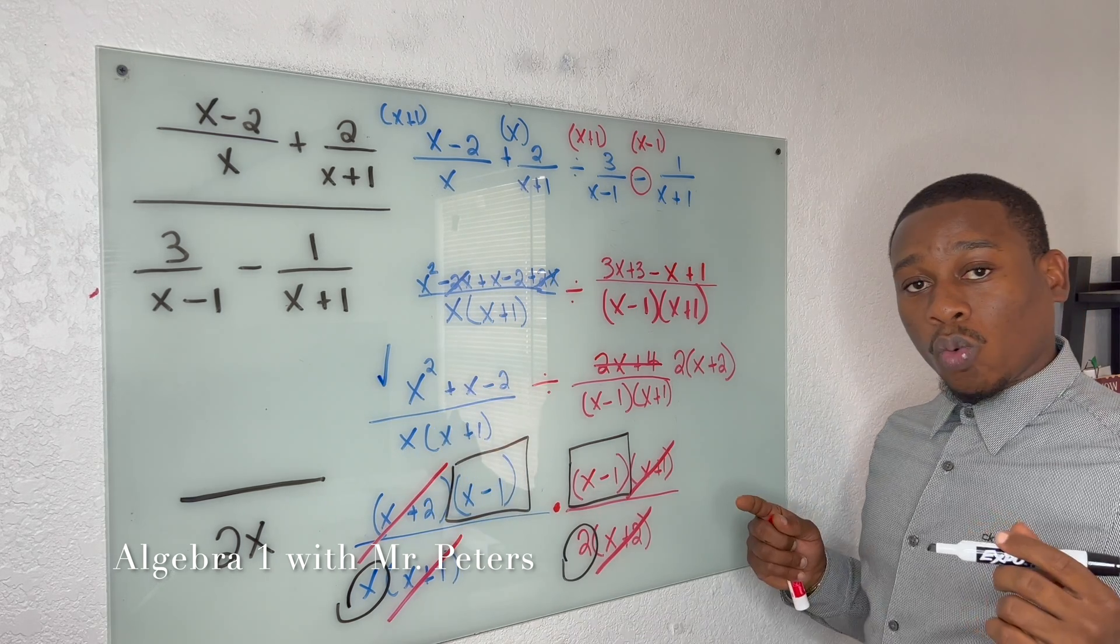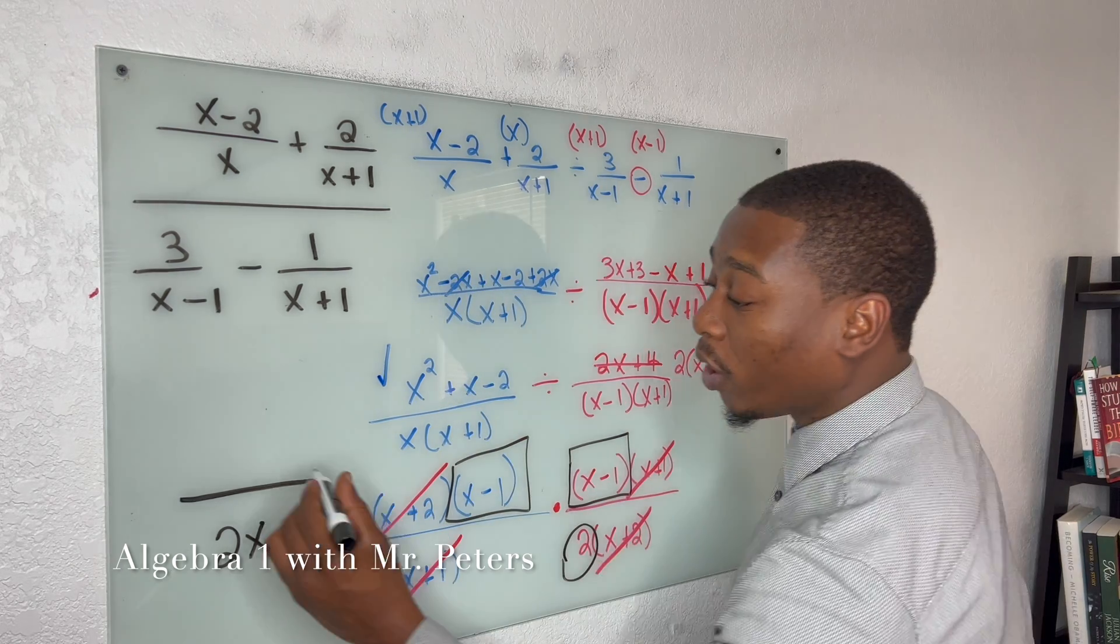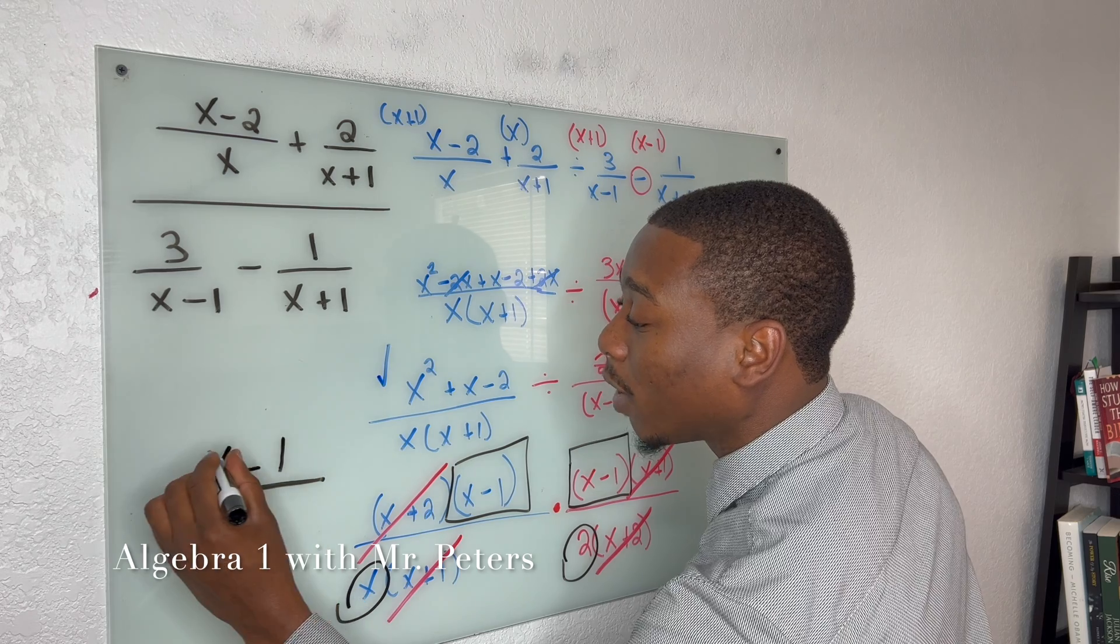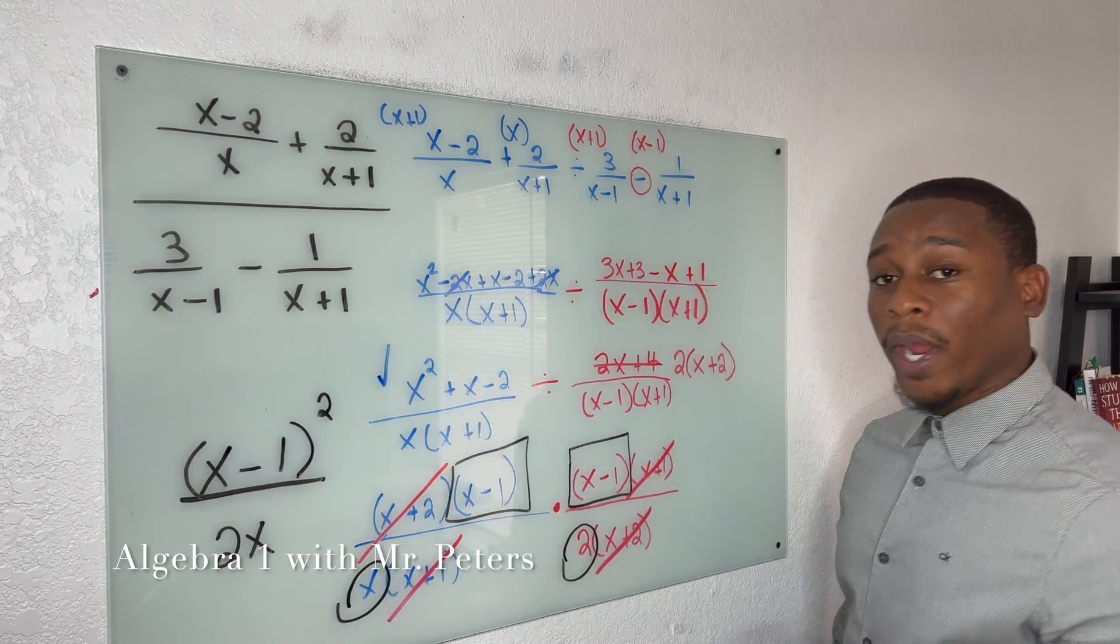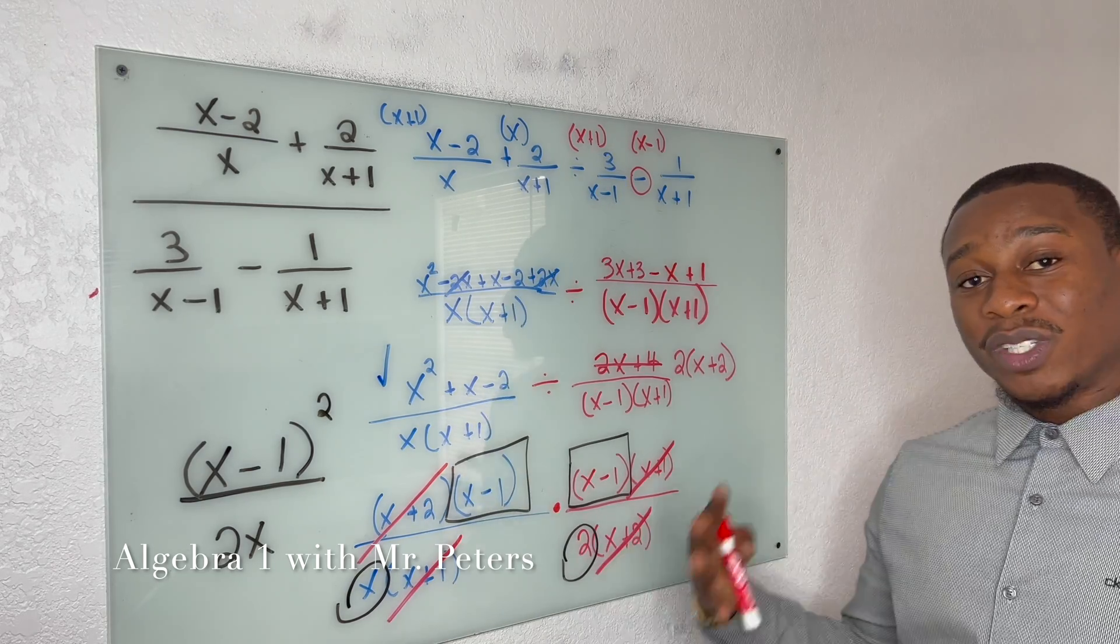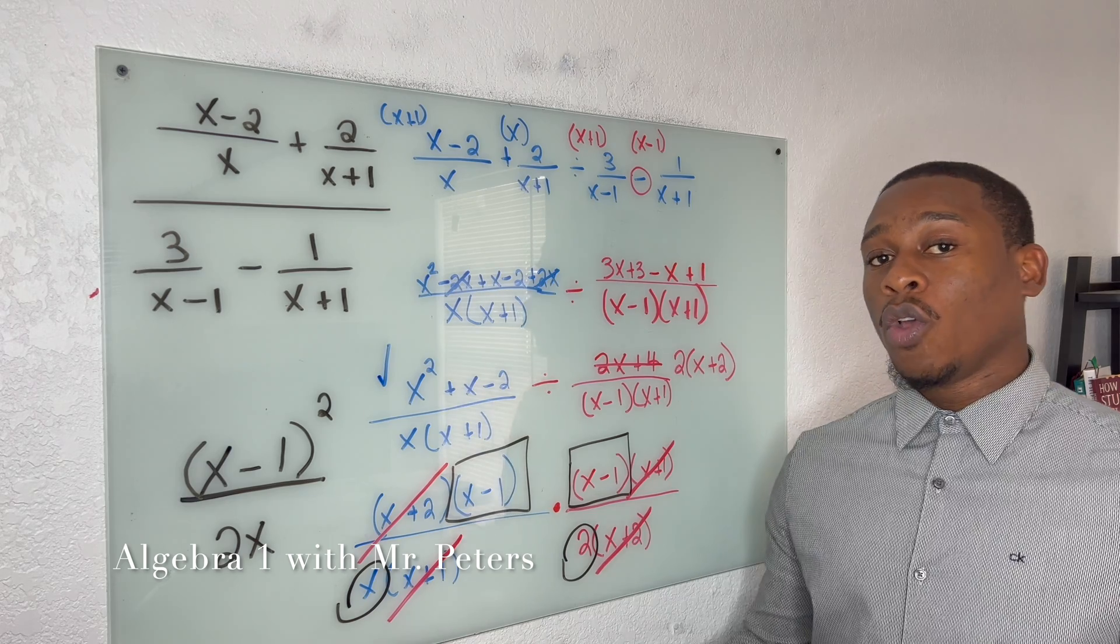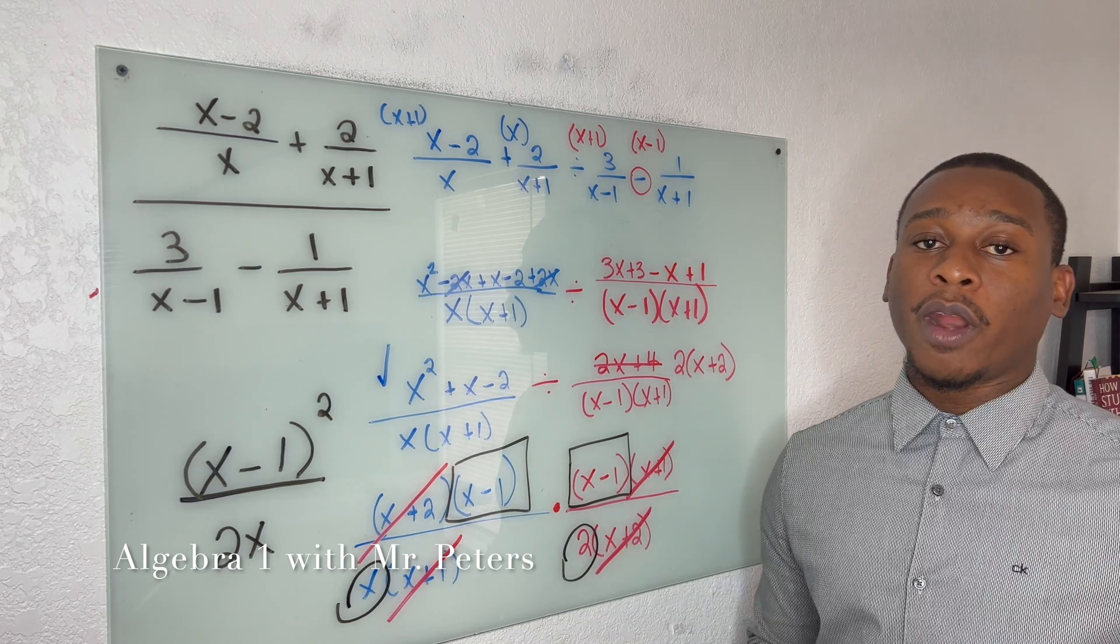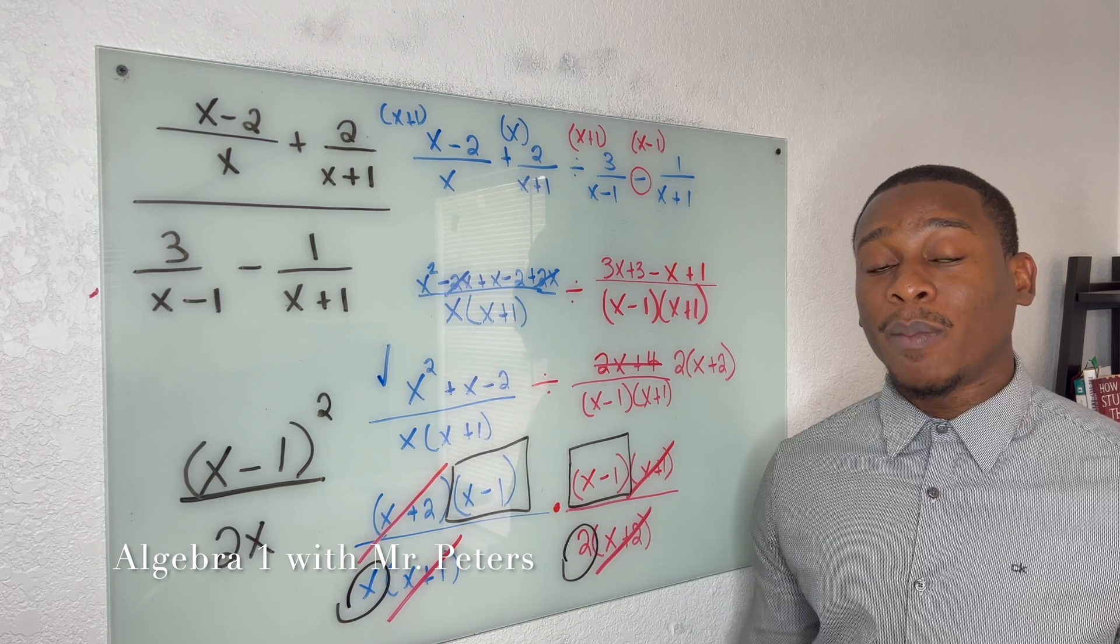So you could either write it twice, or the way you're going to see it on your test or a quiz is x minus 1, and then in parentheses, squared. So if we're talking about how to simplify complex fraction, guys, with variables in the denominator, this is a way that you can do it without the lowest common denominator.